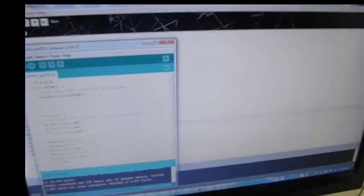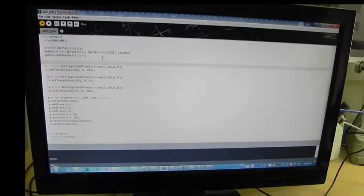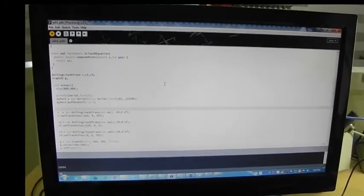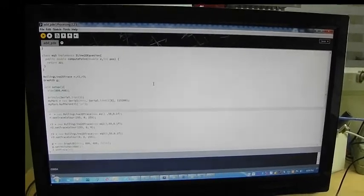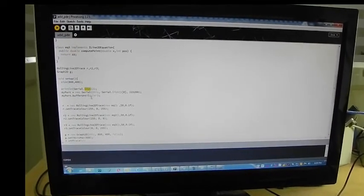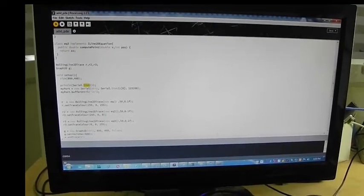Now, here is my Processing library. So, this is my Processing code. Here I am using a 2D graph to plot the data. I am collecting using a serial port data and plotting to the graph.